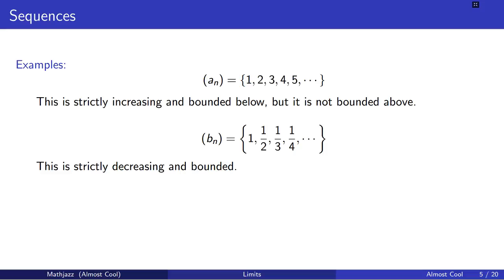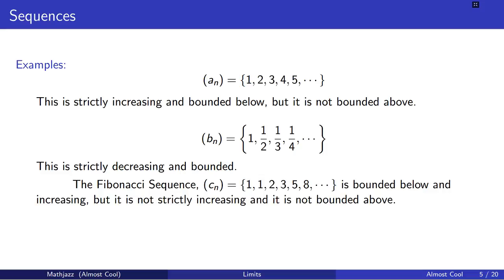The sequence b_n is a strictly decreasing bounded sequence — every element is strictly less than the element that came before it. The number 1 is greater than or equal to every element in the sequence, and 0 is less than or equal to every element. So we have both bounded above and bounded below. The Fibonacci sequence is bounded below and is an increasing sequence, but it's not strictly increasing because the first two elements are the same. We do know that 1 is less than or equal to every element, so it is bounded below, but it is not bounded above.